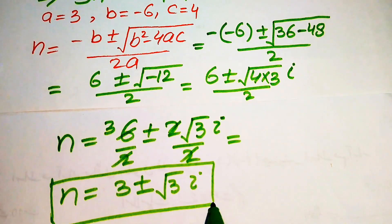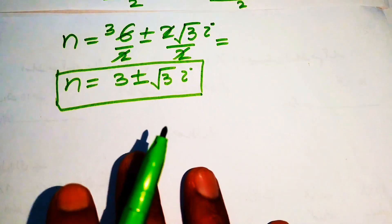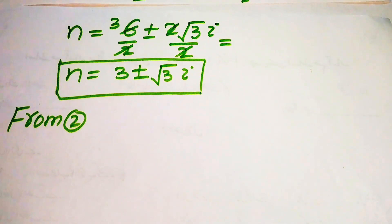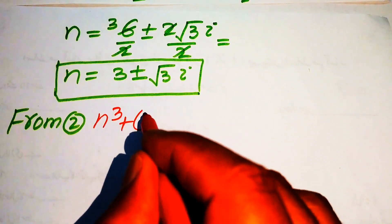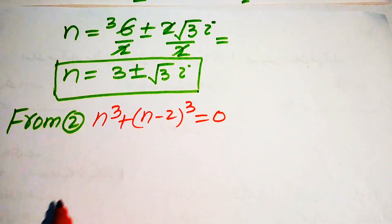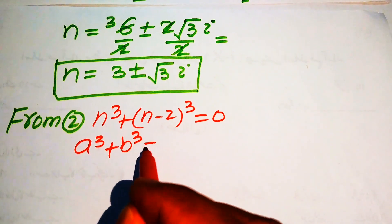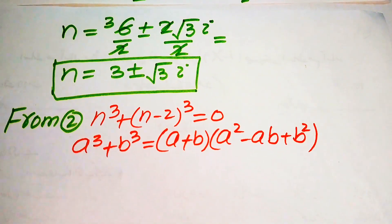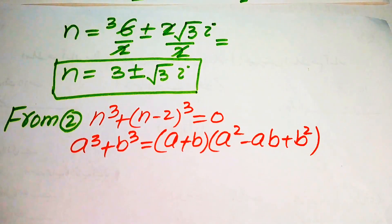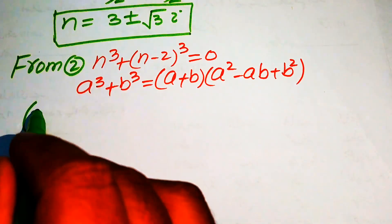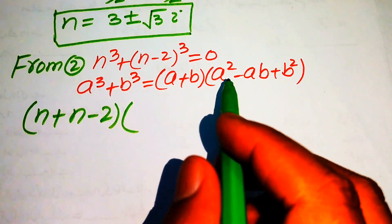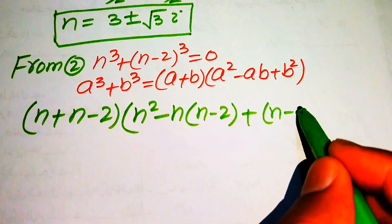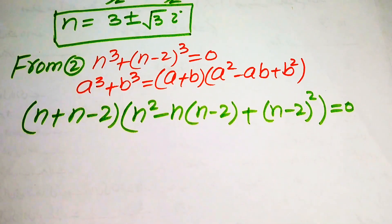These are the first two complex roots of the given equation. Now we focus on equation number 2, which is n cubed plus n minus 2 cubed equals to 0. We use the sum of cubes formula: a cubed plus b cubed equals a plus b times a squared minus ab plus b squared. Applying this, with a equal to n and b equal to n minus 2, we write n plus n minus 2, times n squared minus n times n minus 2, plus n minus 2 squared, equals to 0.